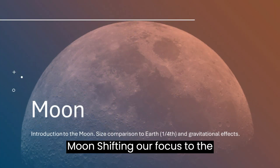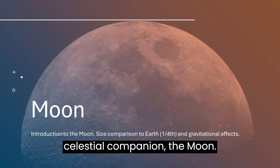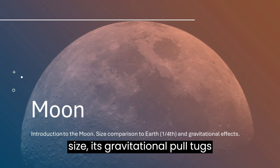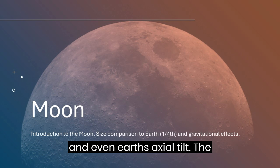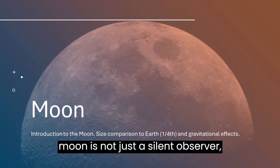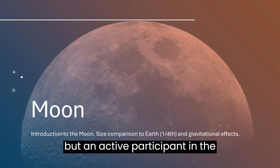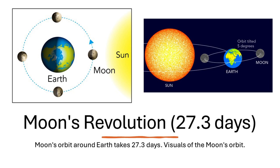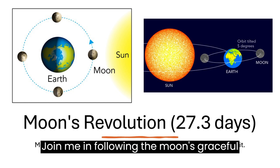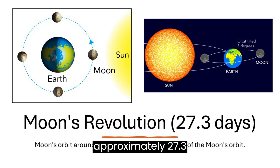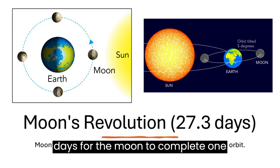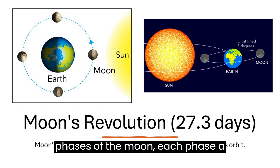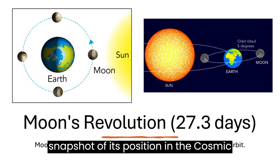Shifting our focus to the night sky, let's meet our celestial companion the Moon. Despite being only a quarter of Earth's size, its gravitational pull tugs at our planet, influencing tides and even Earth's axial tilt. The Moon is not just a silent observer but an active participant in the celestial drama. It takes approximately 27.3 days for the Moon to complete one orbit, and as it travels through space, we witness the ever-changing phases of the Moon, each phase a snapshot of its position in the cosmic ballet.